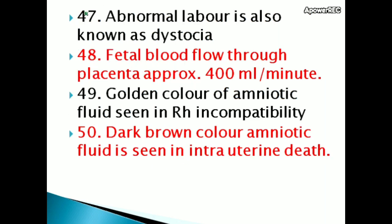Abnormal labor is also known as dystocia. Fetal blood flow through the placenta is approximately 400 ml per minute.